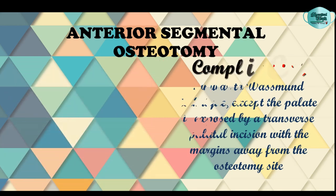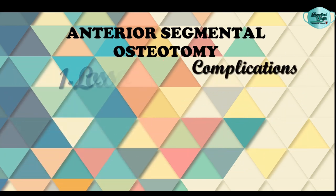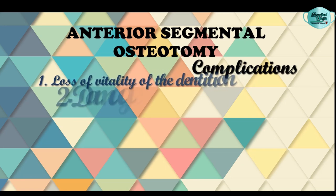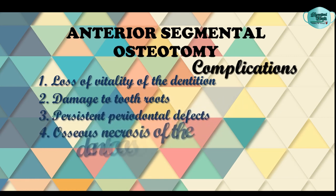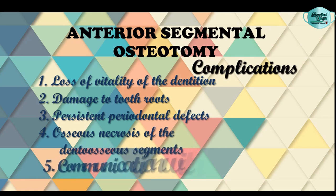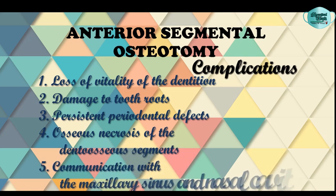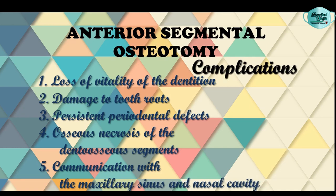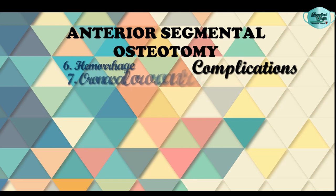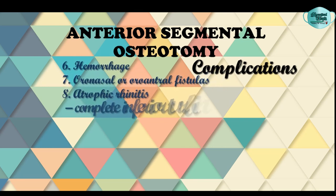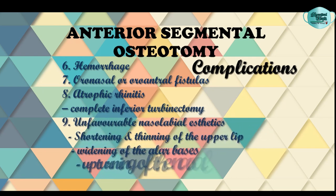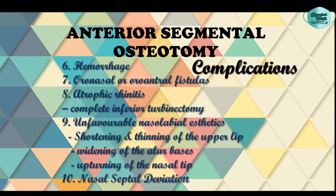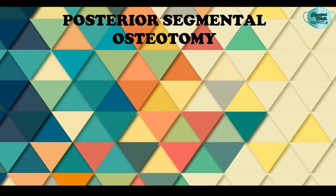The complications of anterior maxillary segmental osteotomy include loss of vitality of the dentition, damage to tooth roots, persistent periodontal defects, osseous necrosis of the dental osseous segments, communication with the maxillary sinus and nasal cavity, hemorrhage, oronasal and oroantral fistula formation, unfavorable nasolabial aesthetics including shortening and thinning of the upper lip or widening of the alar bases, upturning of the nasal tip, and nasal septal deviation.